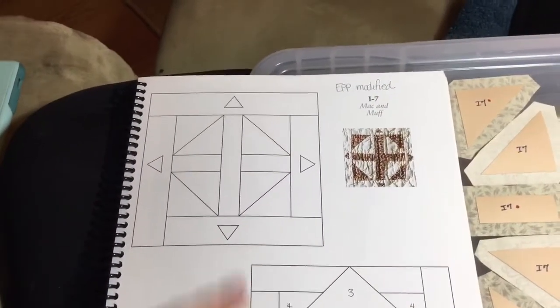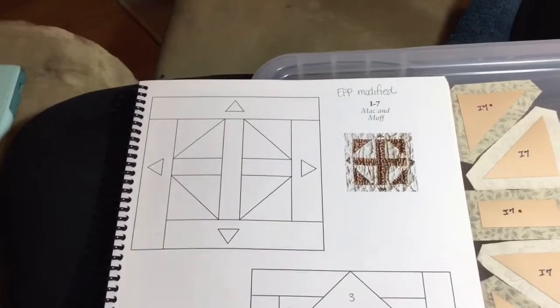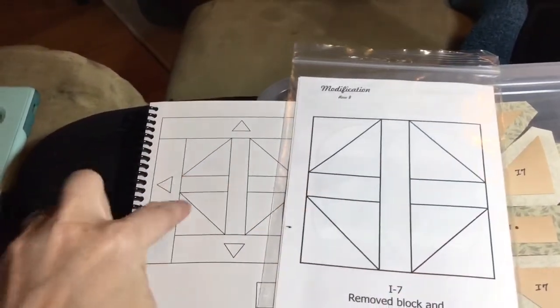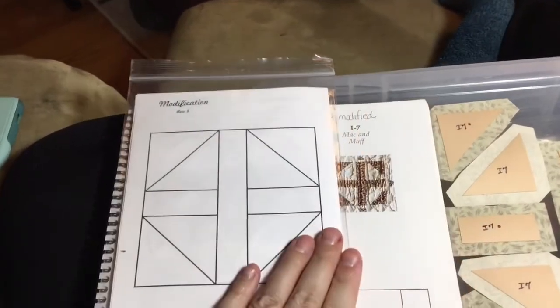Now we're up to I7, which is an EPP modified block. So you're going to go to the booklet to refer to the pieces, and they've taken this middle section and made it as big as the entire block.